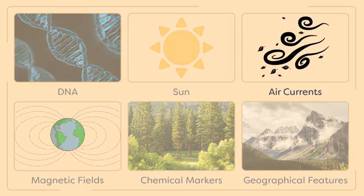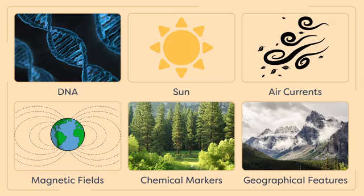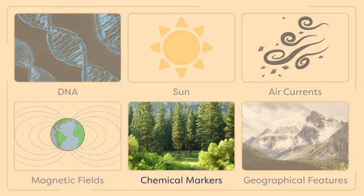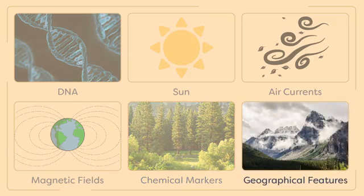Air currents may also play a role in monarch navigation. Monarch butterflies take advantage of southward-moving cold fronts to aid southern migrations in the fall. With the help of tailwinds from these jet streams, individual monarchs can travel distances exceeding 1,000 kilometers without needing to refuel and build up fat reserves. In fact, monarch butterflies can fly at altitudes over 3,350 meters above ground for up to 12 hours, covering distances of up to 640 kilometers a day. Other suggested navigational mechanisms include orientation by magnetic fields and chemical markers left behind on plants by individuals from previous generations. Geographical features such as mountains may also influence flight direction by funneling monarch butterflies in specific directions.